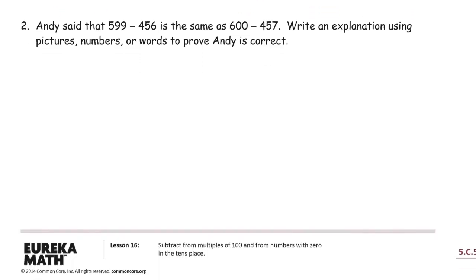Andy said that 599 minus 456 is the same as 600 minus 457. Write an explanation using pictures, numbers, or words to prove that Andy is correct.